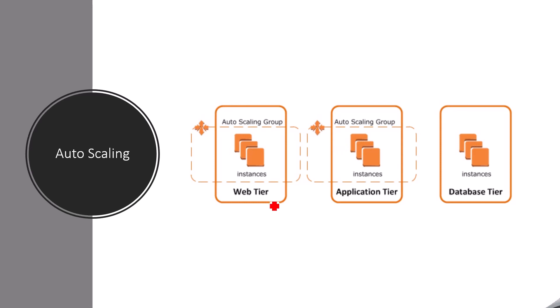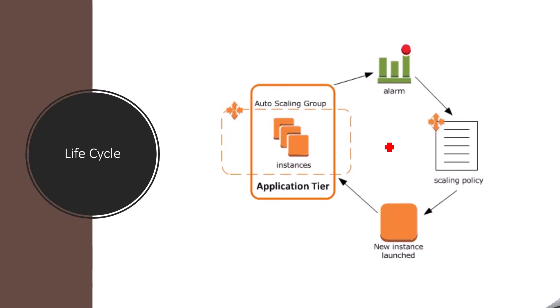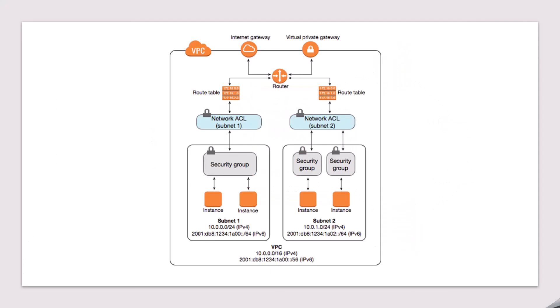This diagram shows the auto scaling three-tier architecture — web tier, application tier, and database tier. The web tier and application tier are in the auto scaling group. This is the lifecycle of the auto scaling group: when a new instance is required, an alarm triggers the scaling policies, which attach a new instance to the application auto scaling group.